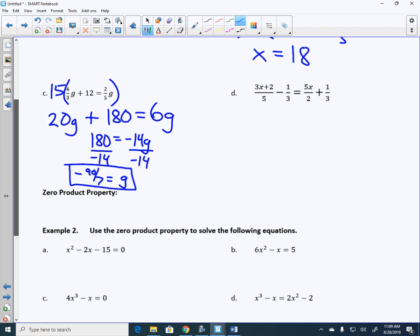Subtract the 20G. I get 180 is equal to negative 14G. Divide by negative 14. I get negative 90 over 7 is equal to G. So what about the next one? What do you want to multiply through by there? 30. 30 divided by 5 is 6, so I will then distribute 6. 6 times 3x is 18x. 6 times 2 is 12. 30 divided by 3 is 10 times 1 is 10, so it's minus 10. 30 divided by 2 is 15, and 15 times 5 is 75x. 30 divided by 3 is 10. And there you have it. Fractions are gone.